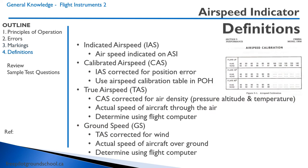Let's talk about the definitions for different airspeeds. First is indicated airspeed — the actual airspeed that you read on the airspeed indicator. Second, we have calibrated airspeed. We discussed this earlier when discussing errors at high angles of attack. Often the indicated airspeed under-reads, so calibrated airspeed is the indicated airspeed corrected for position error.